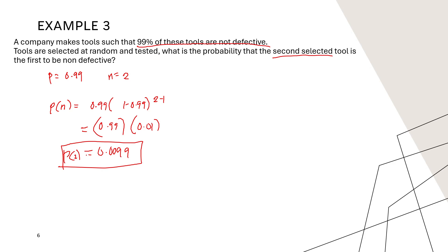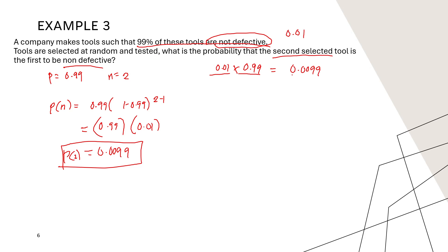We can verify example three manually. The second tool must be the first non-defective one, meaning the first tool is defective. Since 99 percent are not defective, 1 percent are defective, so the probability of the first tool being defective is 0.01. The second tool being non-defective has probability 0.99. Multiplying: 0.01 times 0.99 equals 0.0099 — the same result.